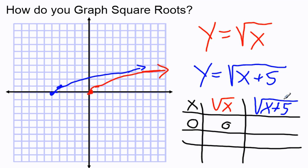But if x is 0 in this case, then we would get the square root of 0 plus 5, which is going to be the square root of 5, which is a little bit over 2. So, you can see, up here, I'm a bit over 2 on my graph.